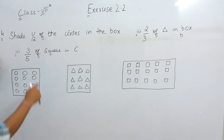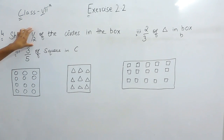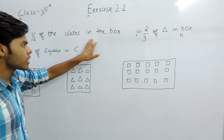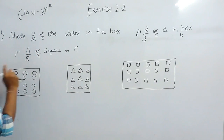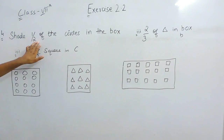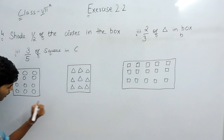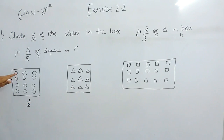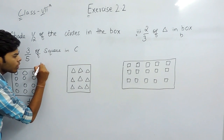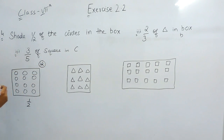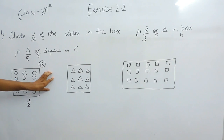In the first part we have to shade 1 by 2 of the circles in the box. This simply means that we have to shade half of the circles. We can see that there are 4 rows and 3 columns, meaning there are total 12 circles. We have to shade half of them, which means we have to shade any 6 circles.